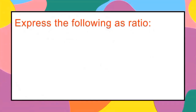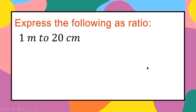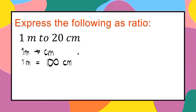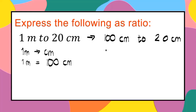Let us now express the following as a ratio. We have 1 meter to 20 centimeters. We cannot express this as a ratio yet because the given quantities do not have the same unit of measure. One must be converted first. So we change 1 meter to 100 centimeters, giving us 100 centimeters to 20 centimeters, which reduces to 5 is to 1, or 5 over 1.